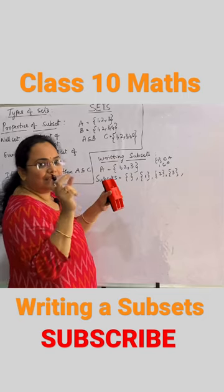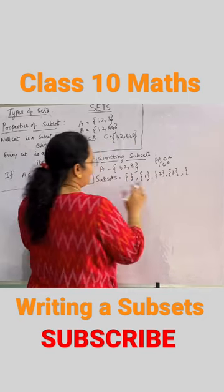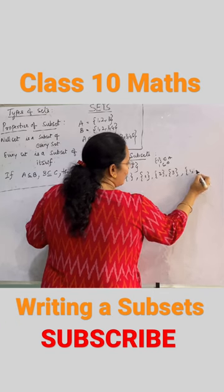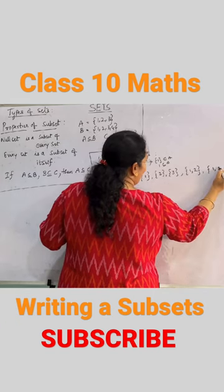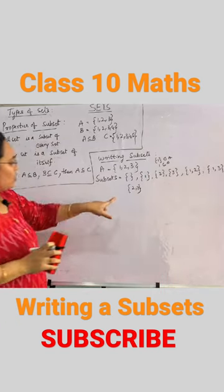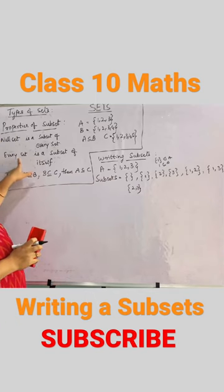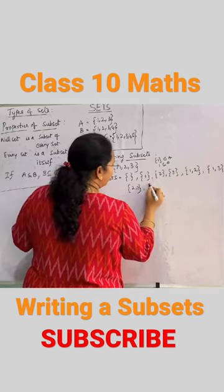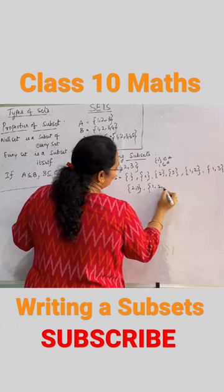Two-element subsets, that is {1, 2}, {1, 3}, and {2, 3}. And also, we have learned that every set is a subset of itself. You will write {1, 2, 3}.